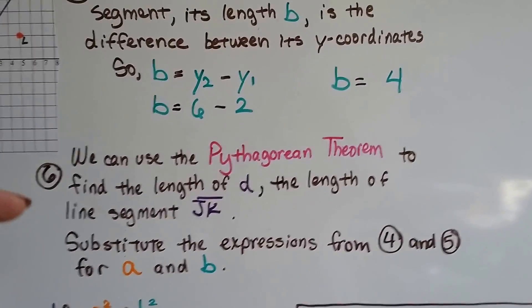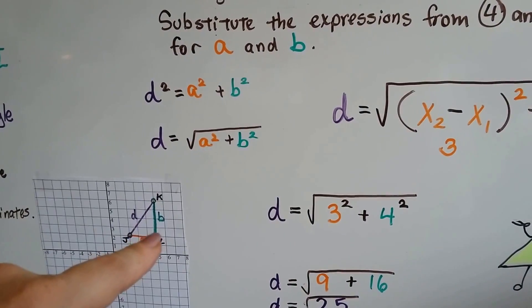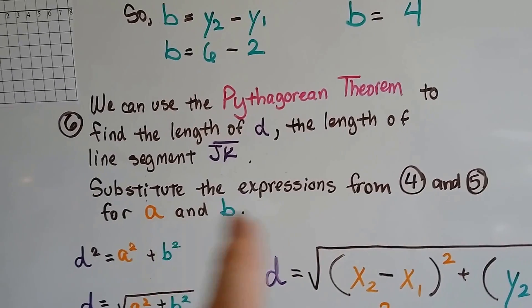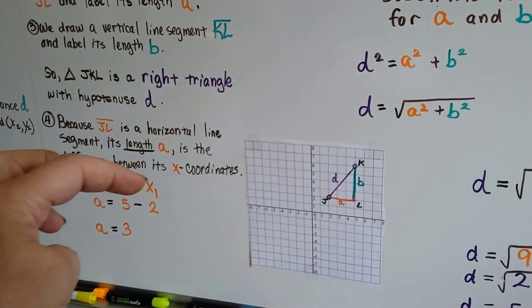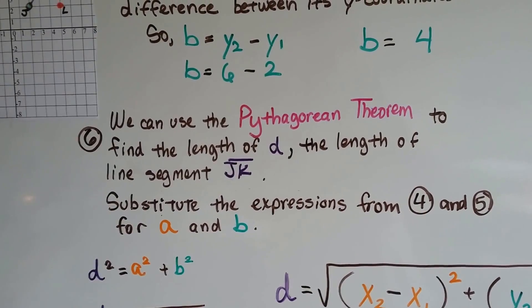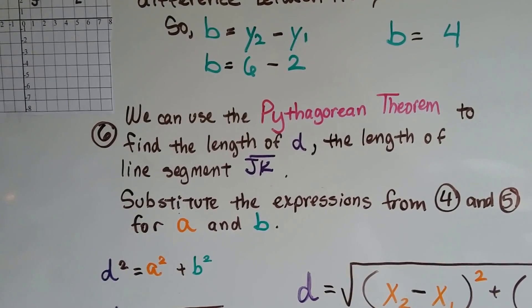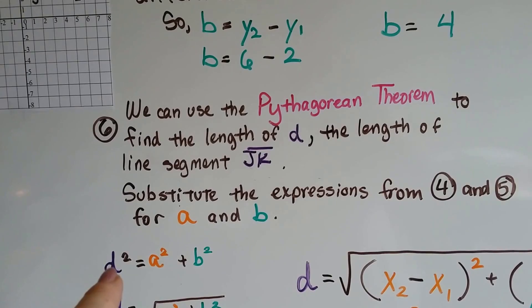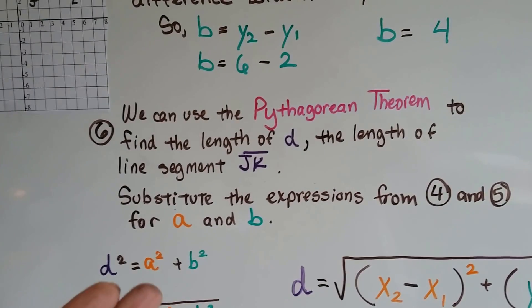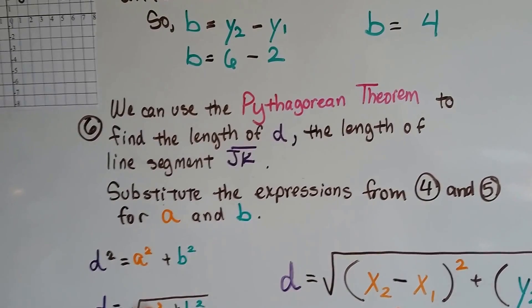Now we can use that Pythagorean theorem to find the length of d right here. That's the hypotenuse of the triangle, isn't it? So now we've got a and b. We just need that side. So we substitute the expression from numbers 4 and 5 for a and b. And the expression for number 4 was x2 minus x1, and for number 5 it was y2 minus y1. So using the Pythagorean theorem of a squared plus b squared equals c squared, or in this case, the converse. Remember we talked about the converse of the Pythagorean theorem? That means the c squared went first. Well, we're using d in this case. So now we've got d squared equals a squared plus b squared. It doesn't matter what the variable is, right? A variable is just an unknown number.